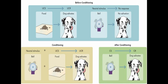Before conditioning, there is food which is a natural stimulus — we call it unconditioned stimulus — and the salivation of the dog is unconditioned response because the relation is natural. And here we have a neutral stimulus, the bell, and there is no response because it's not natural.